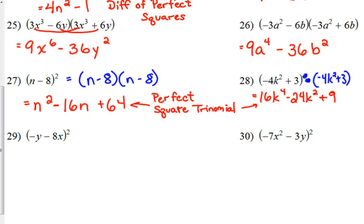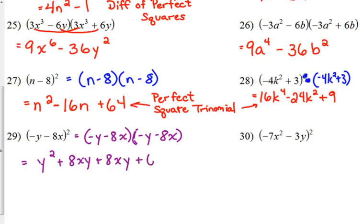So these are perfect square trinomials. You should be able to recognize those when you see them. All right, let's throw two variables in there since that's what we've been doing today, kicking everything up a notch. All right, so negative y times negative y is positive y squared. Our outside is going to give us positive 8xy. The inside is going to give us positive 8xy. And the last is going to give us positive 64x squared.